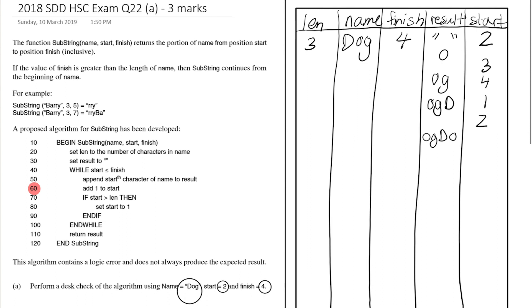We add one to start, making start 3. Start equals len so we skip the if statement and loop back. Start 3 is less than finish 4, so we append the third character 'G' to result, giving 'ogDOG'. We add one to start — now 4 — and since 4 is greater than len 3, we reset start back to 1 again.